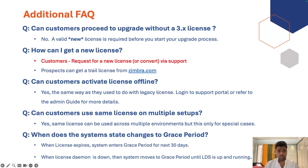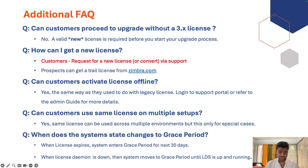Can a customer activate a license offline? Yes, we are going to continue to support that, but to support offline activation they need some additional modules installed — please refer to the admin guide. Can a customer use the same license on multiple setups? Yes, we allow that for special cases. When does the system state change to grace period? There are two scenarios: one is when your license expires, moving the system into grace period for the next 30 days; and when the license demand service is down, the system moves to grace period until the LDS is up and running.